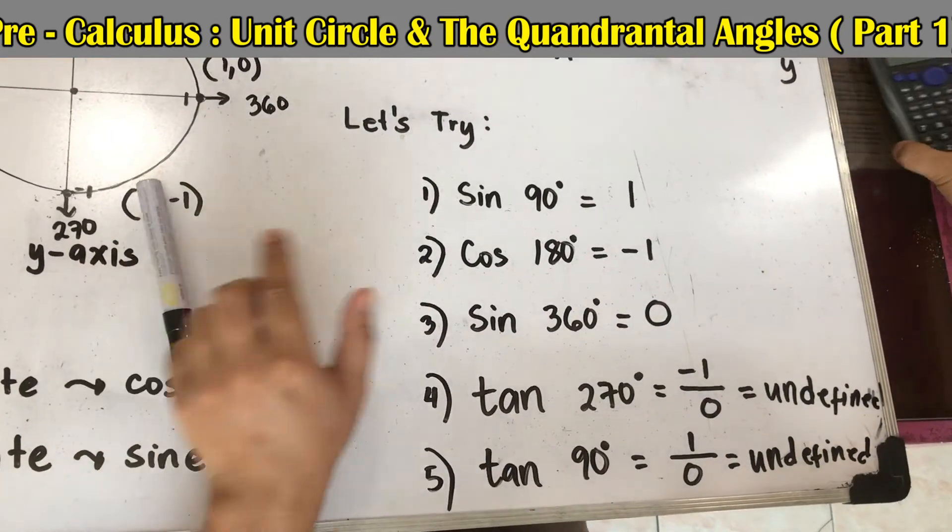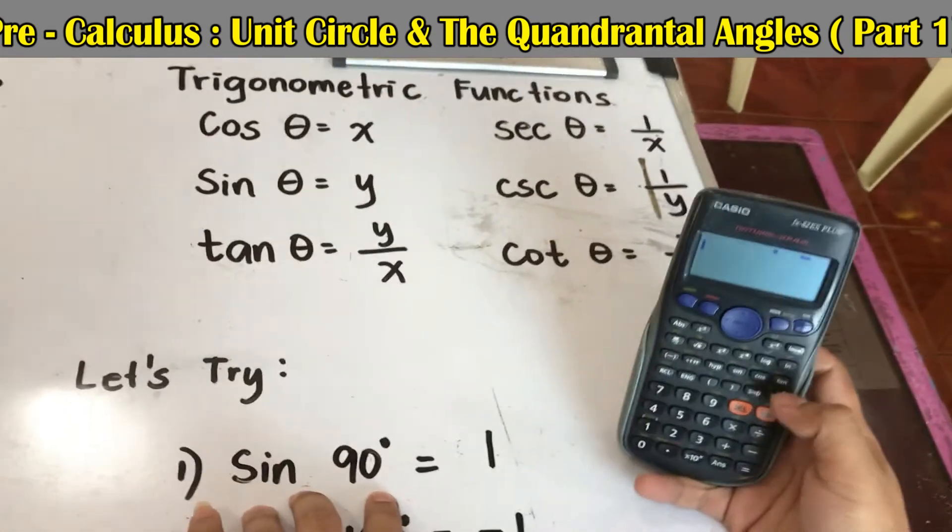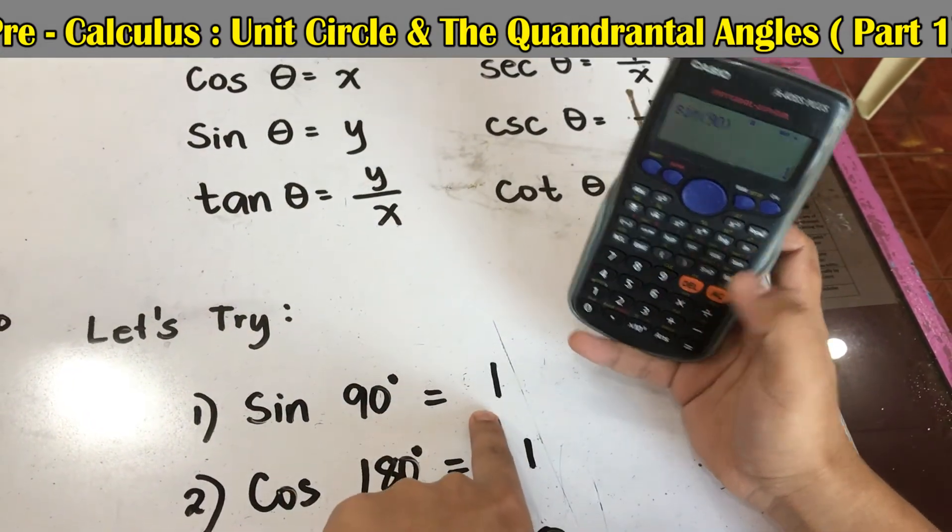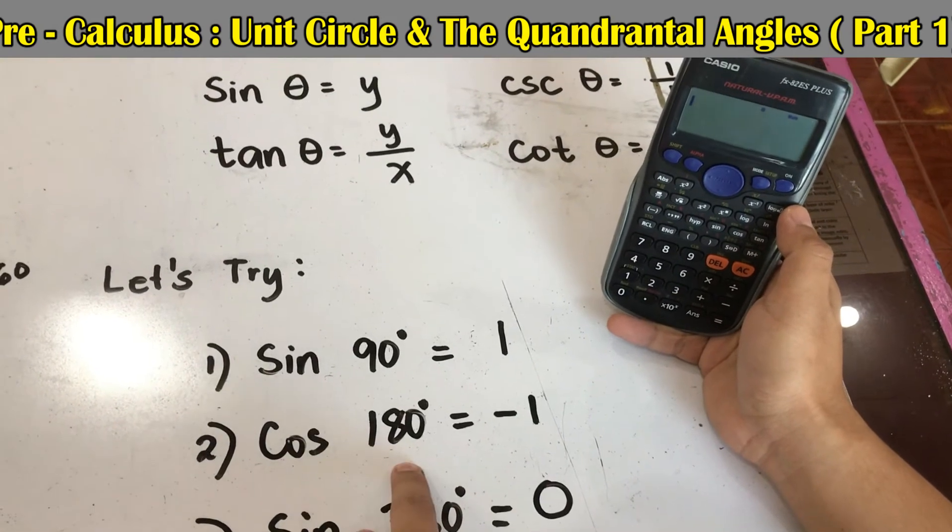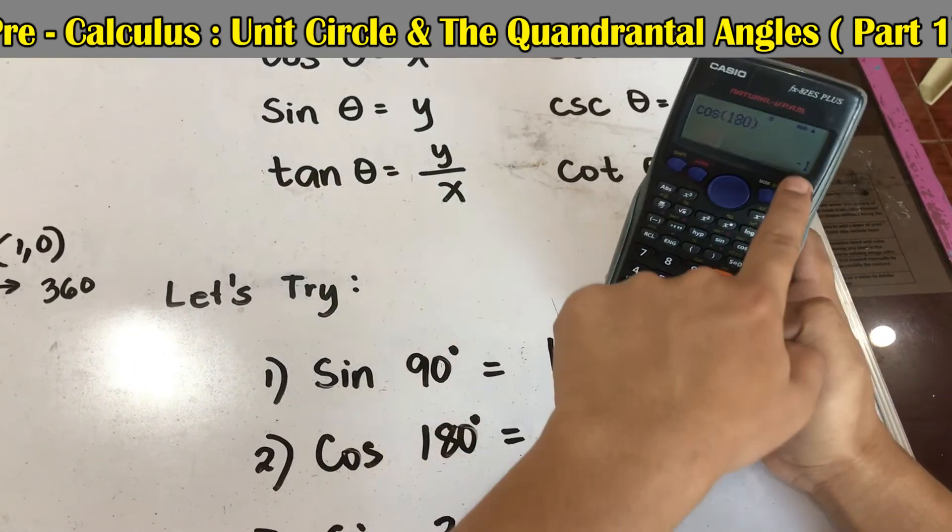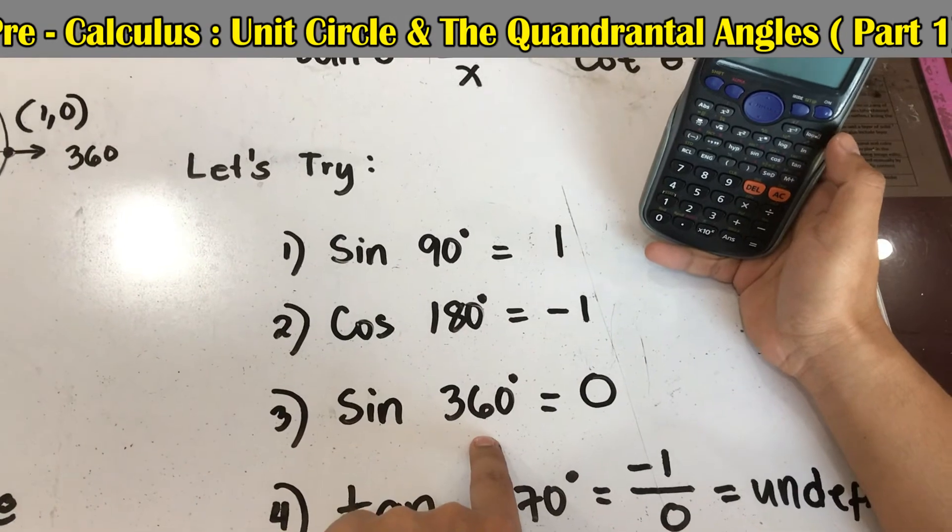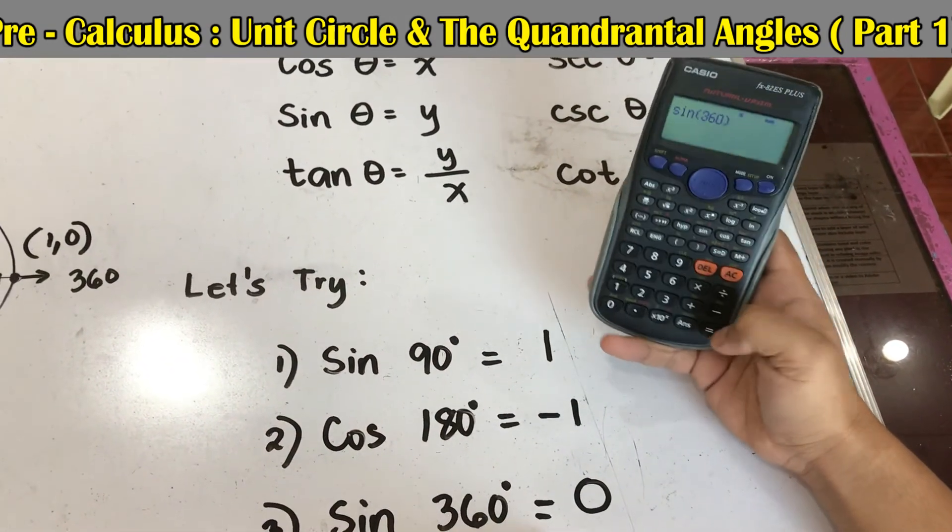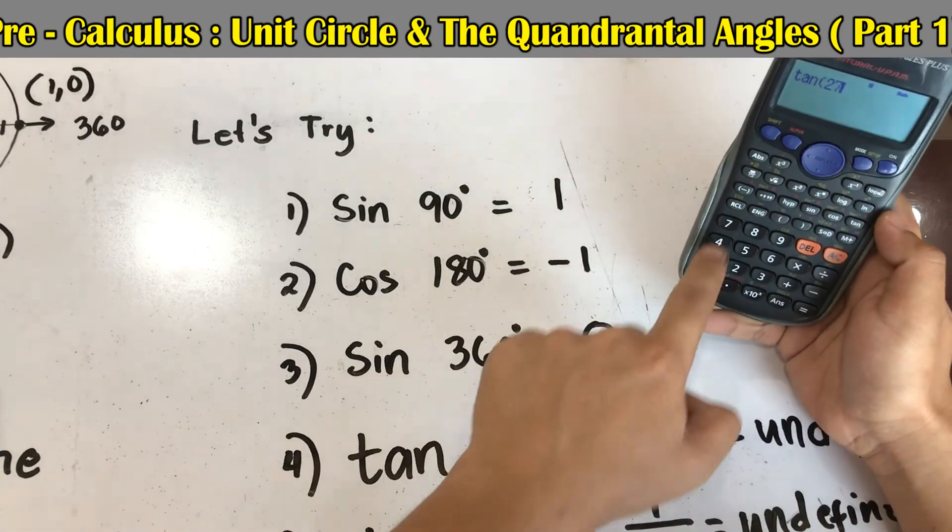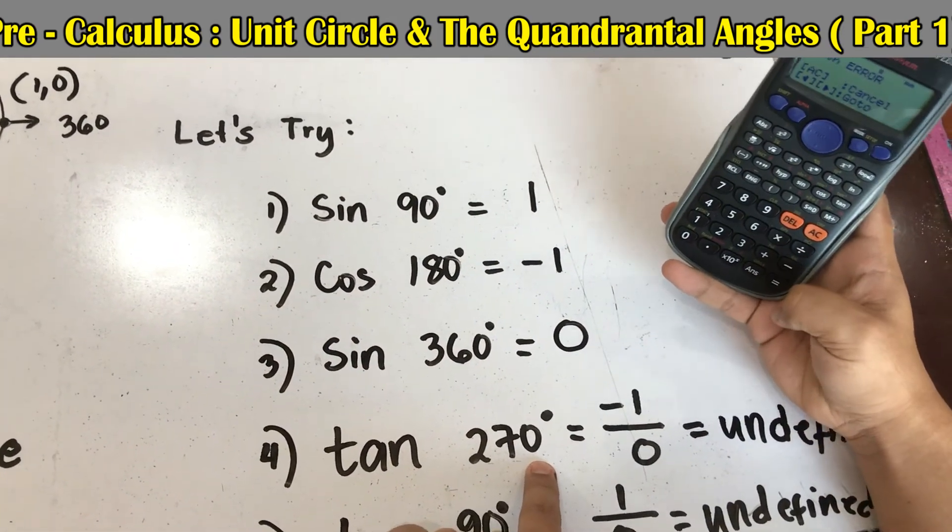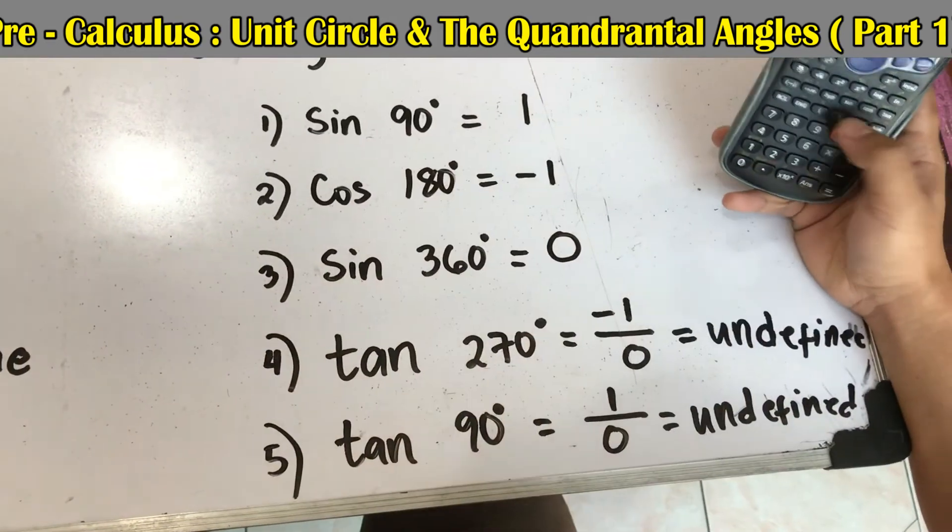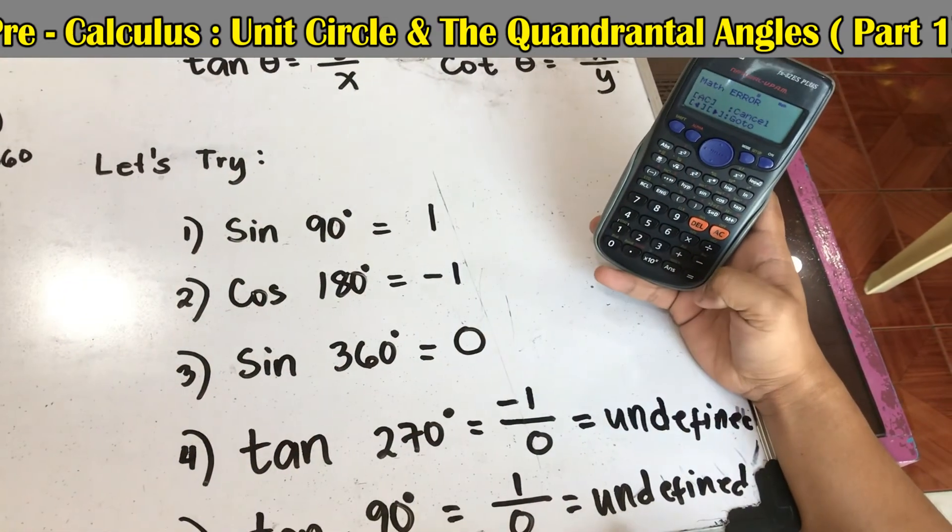Okay, let's check using the calculator. Sine 90, press sine 90, so that is 1. Next, cosine 180, negative 1. Next, sine 360, zero. Tangent 270, so it's undefined, that means math error. Tangent 90, math error, undefined.